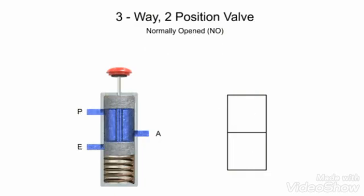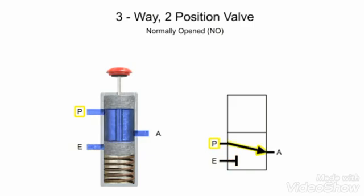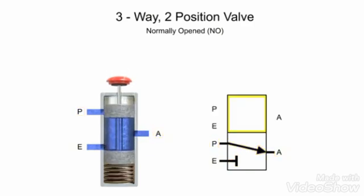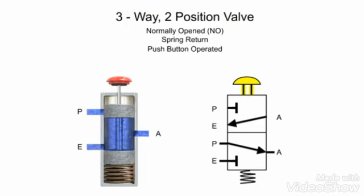Here is another three-way, two-position valve. This valve also has an inlet port P, exhaust port E, and output port A, but they are in a different configuration. In its normal position, exhaust port E is blocked and fluid flows from pressure port P to outlet port A. In the second position, pressure port P is blocked and allows fluid to flow from outlet port A to exhaust port E. The valve is also spring return and push button operated.